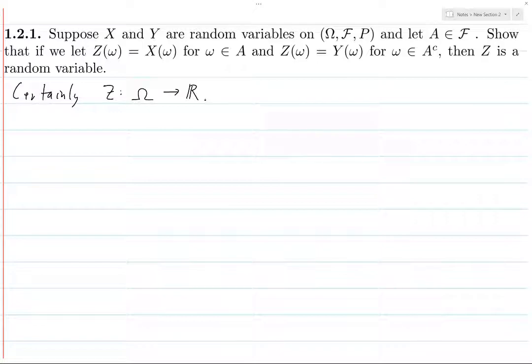Okay, so Z is certainly a function which maps between the correct spaces. And now all we need is that the inverse image of any Borel set in R is an element of the sigma algebra F on the space omega.